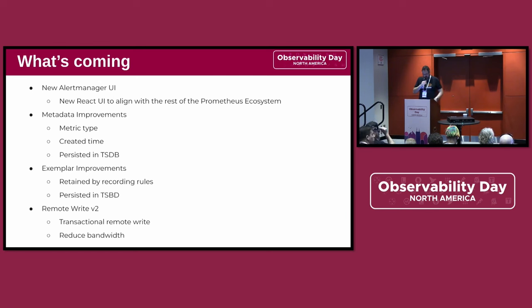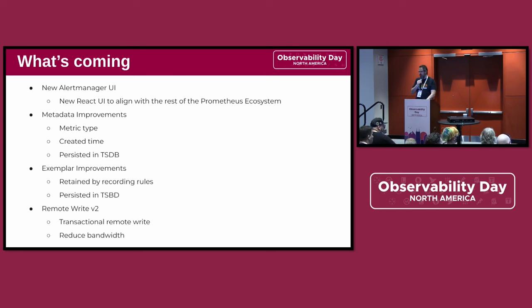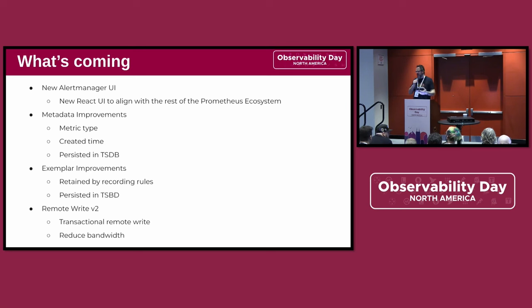So what's coming? We will have a bunch of metadata improvements. You will finally be able to deduce what the metric type is. This will allow us to do more magic — for example, if this is a counter, we can actually prove that, not just deduce it from the name. So you can automatically put a rate on this, and all those synthetic quality-of-life improvements become easier to implement.